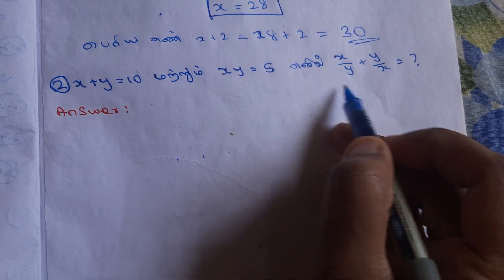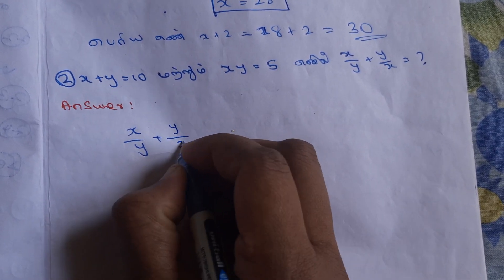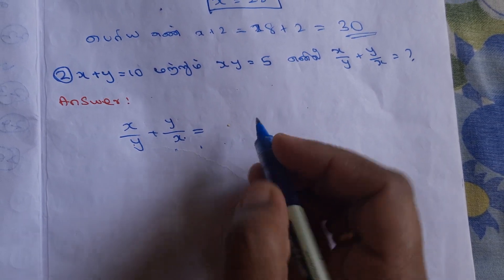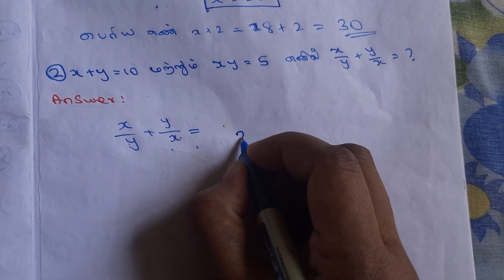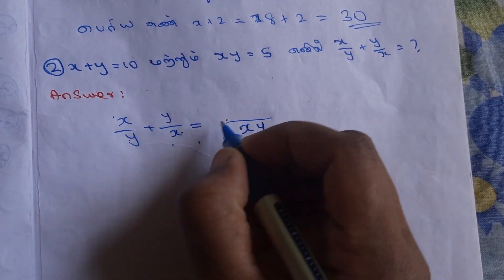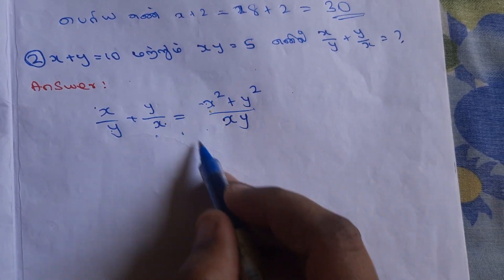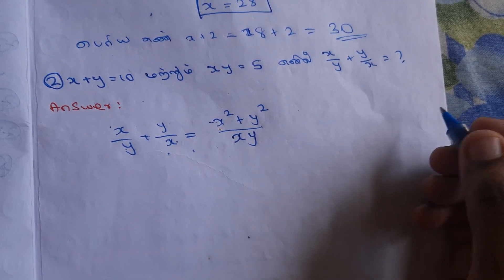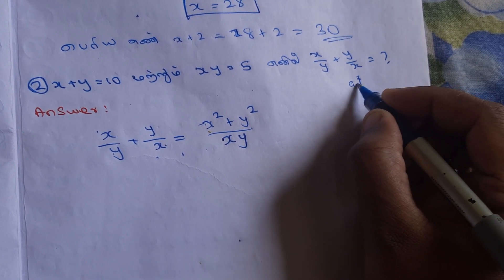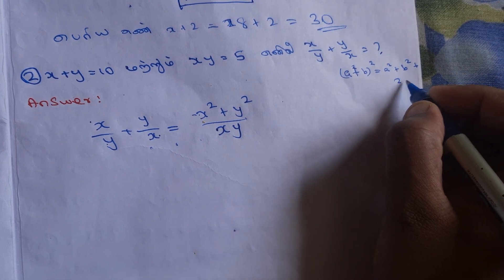Now we can work on x divided by y plus y divided by x. This equals 1, and we get x squared plus y squared. To solve this, let's learn a formula: a squared — a plus b whole squared equals a squared plus b squared plus 2ab.